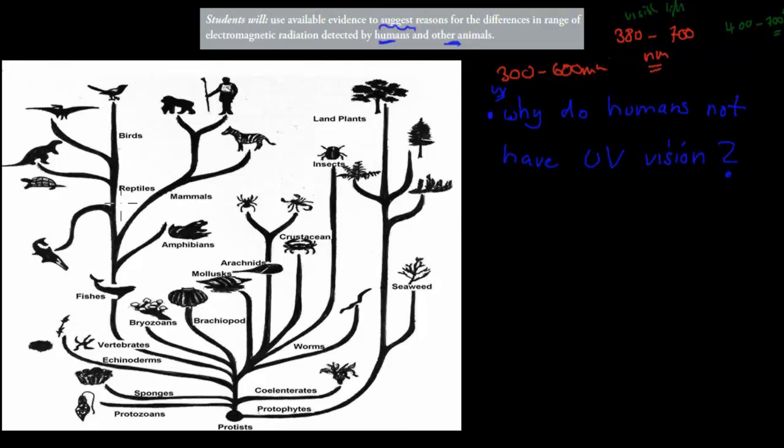If we look at the actual evolutionary tree, we've got the vertebrates, so these are the ones which have a backbone - that would be the fish, the reptiles, amphibians, mammals, birds - and the invertebrates, which are your insects, your spiders, crabs, and everything else. These have no backbone, no spine.